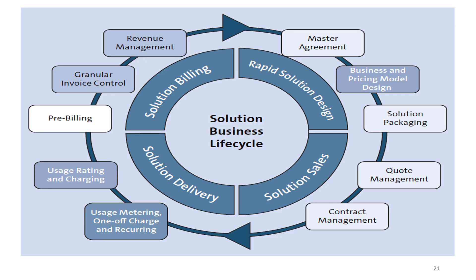The first phase is Design, in which SAP BRIM assists with the creation of a uniform design for a business and pricing model, along with the master agreement that will be used as the base for other downstream processes. Once this is done, the next phase, Solution Sales, kicks in. In this phase, companies define how they will sell their products with the assistance of contract management functionalities offered by SAP BRIM.